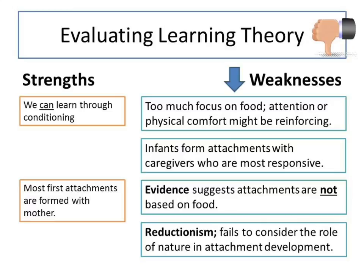The final weakness to consider is that behaviourism is reductionist. This means it explains our behaviour in its simplest terms. Arguing that attachments are learned behaviours and the result of our experience and pleasure fails to take into account the role that nature might play in attachment development. Attachment behaviours don't seem to be just pleasurable, but they also seem to be vital for our safety and perhaps even our survival.